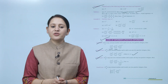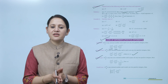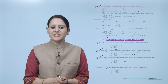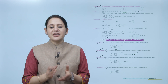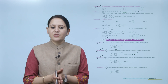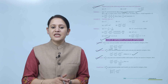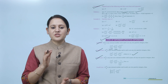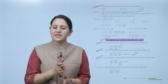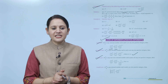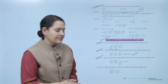Third law: if P/Q is any non-zero rational number and m and n are any two positive integers, then (P/Q)^m divided by (P/Q)^n equals 1 upon (P/Q) to the power n minus m, where m is less than n.